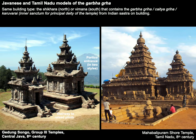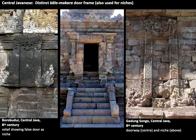Another significant difference is that typical Javanese candi tower constructions are often erected on a raised plane with a stairway leading up. These are some of the little details showing a local interpretation of what is essentially a textual form of transmission, along with the innovation of new types of design.